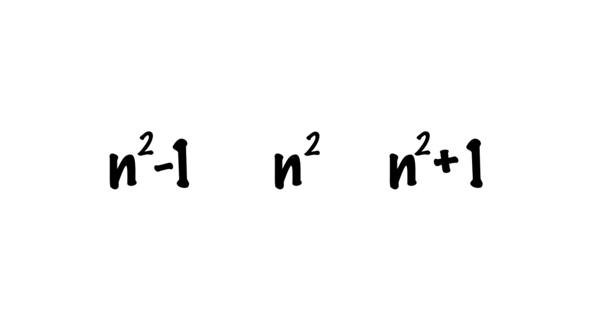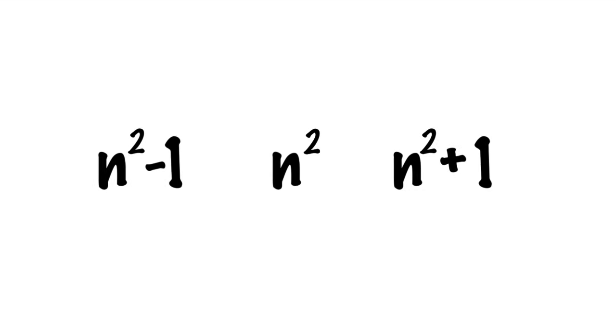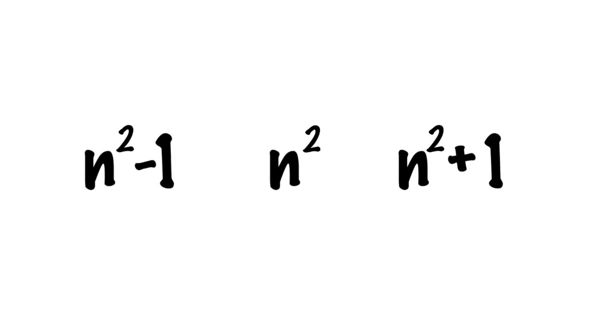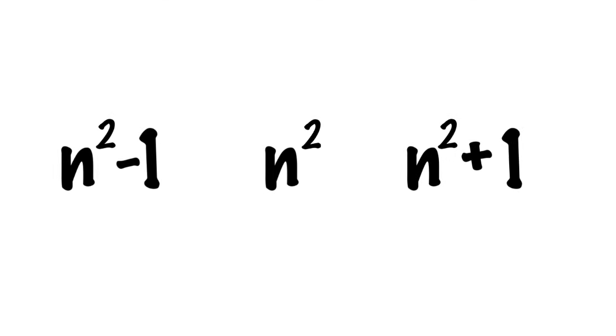Any time you have a sequence of whole numbers n minus one, n, and n plus one, one of them is going to be a multiple of three. And exactly one of them will be a multiple of three. Same thing if you have n squared minus one, n squared, and n squared plus one. One of them and exactly one of them will be a multiple of three.